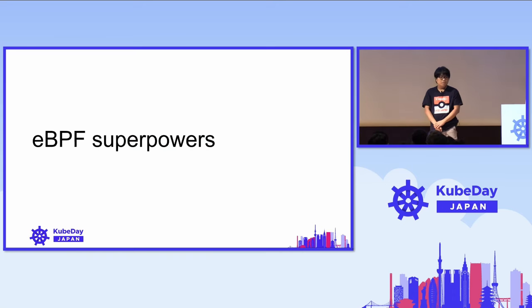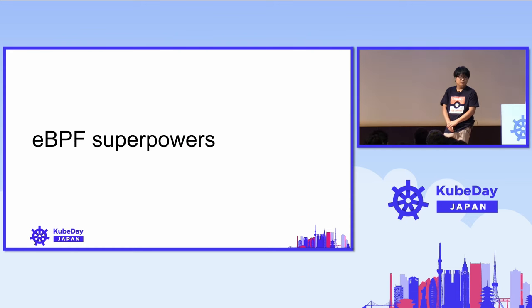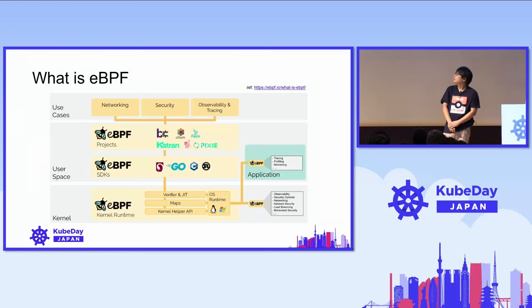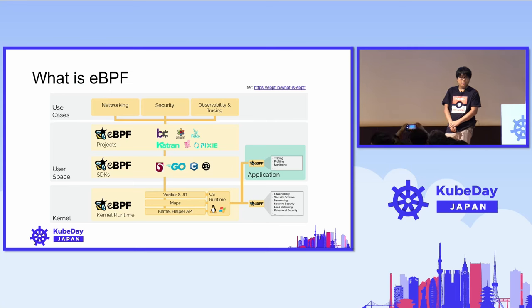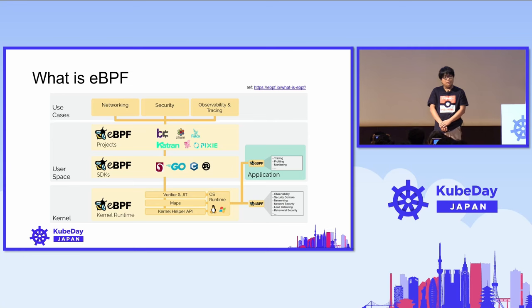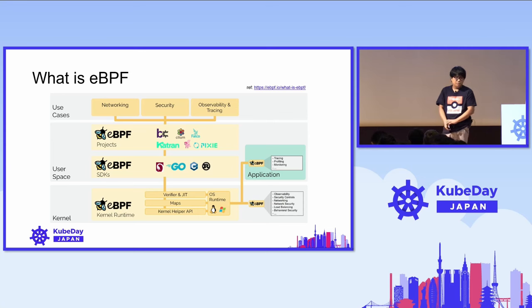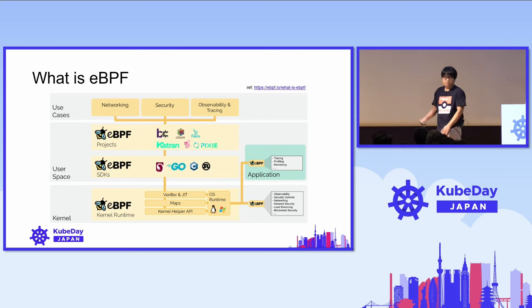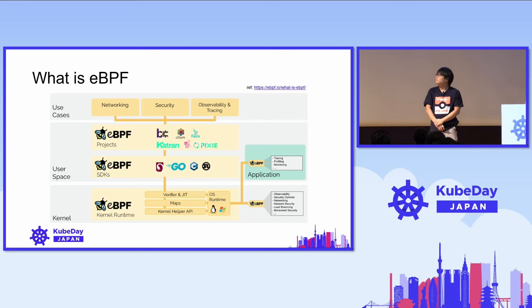To kick things off, I'd like to share the overview of eBPF superpowers. For those unfamiliar, eBPF stands for Extended Berkeley Packet Filter. It allows us to safely and efficiently run sandbox programs in the Linux kernel without changing the kernel. Currently, there are a lot of eBPF-related projects all over the world, and some CNCF projects have applied eBPF.